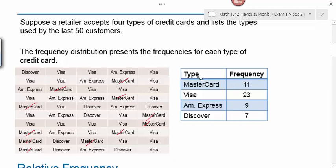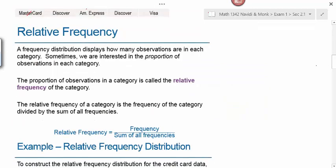Relative frequency. Any time in statistics you see the word relative, I want you to think percent. It is a percent of something. A frequency distribution displays how many observations are in each category. Sometimes we are interested in the proportion of observations in each category. The proportion of observations in a category is called the relative frequency of the category.